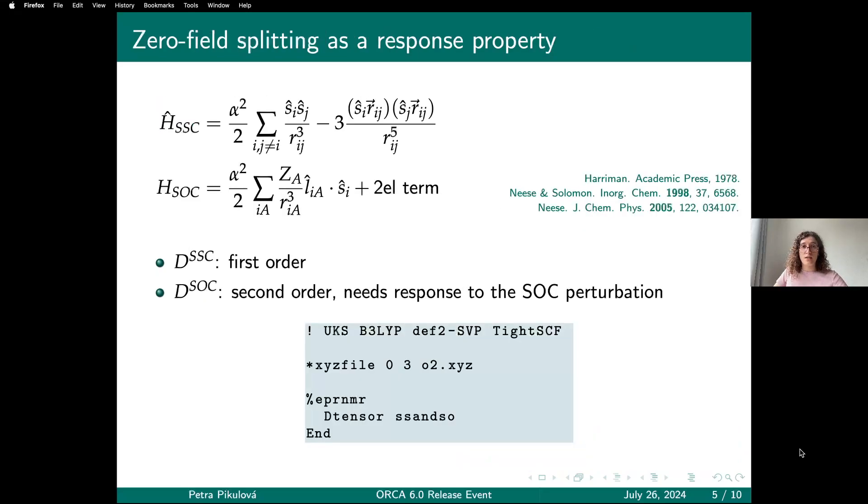Let's look at an example, first at the calculation based on response theory. Here I'm showing the operators that contribute. From the spin-spin coupling, you get a first-order contribution to zero-field splitting. From the spin-orbit coupling, you get a second-order contribution, which means the program needs to solve for a response to the spin-orbit perturbation.